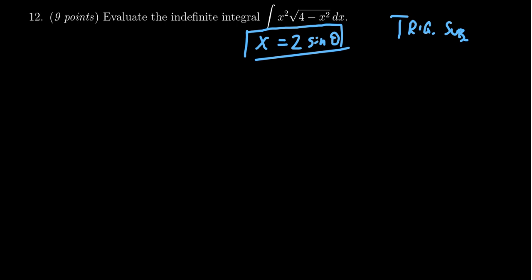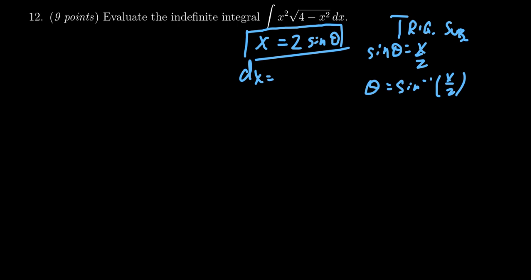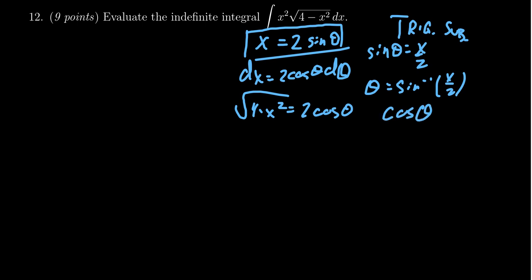Some important things to mention: if you solve for sine, sine theta equals x over 2. If you solve for theta, you get theta equals sine inverse of x over 2. Taking the derivative, we get dx equals 2 cosine theta d theta. We also need the square root of 4 minus x squared, which equals 2 cosine theta. And lastly, cosine theta equals the square root of 4 minus x squared all over 2. These are all the substitutions we're going to need.